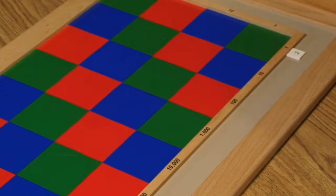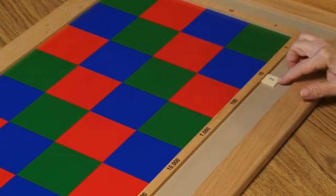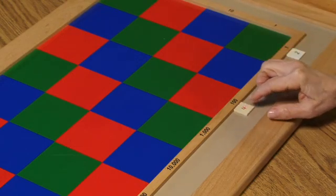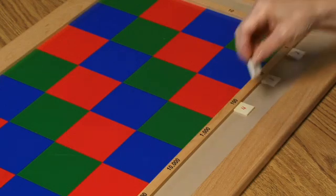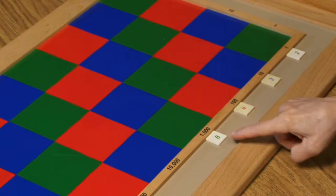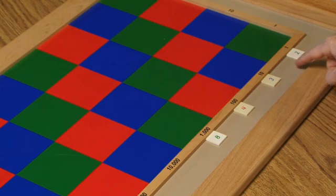Two units, three tens, four hundreds, eight thousands. So our multiplicand is 8,432.